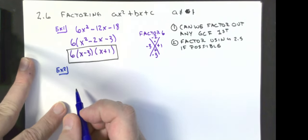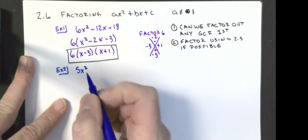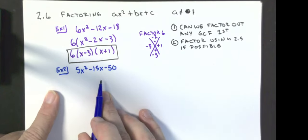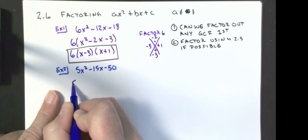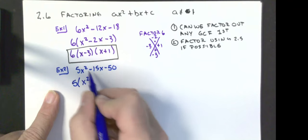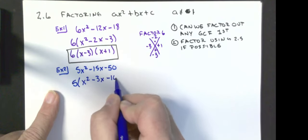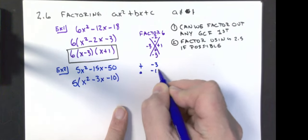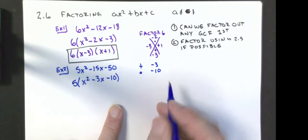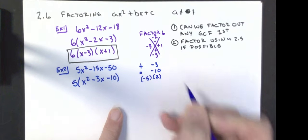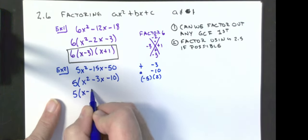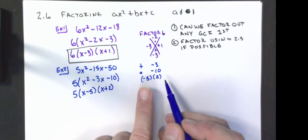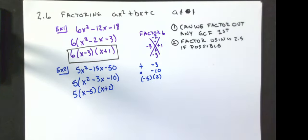Another example: 5x squared minus 15x minus 50. The first thing I'm going to do is factor out a 5, leaving me with x squared minus 3x minus 10. I want two numbers that add to negative 3 and multiply to negative 10. Those two numbers are negative 5 and 2. So my final answer is 5 times (x minus 5)(x plus 2). Verify: 2 minus 5 is negative 3, and negative 5 times 2 is negative 10.